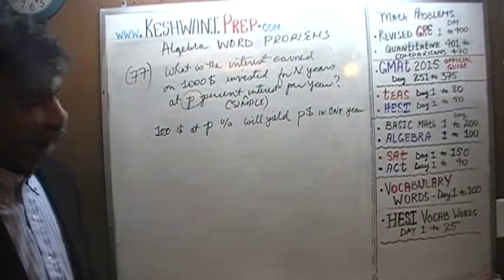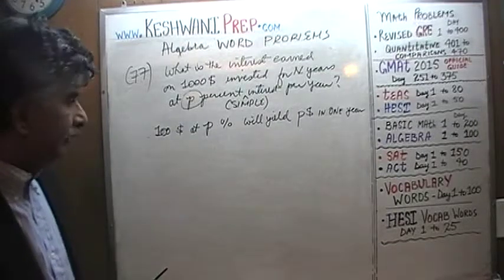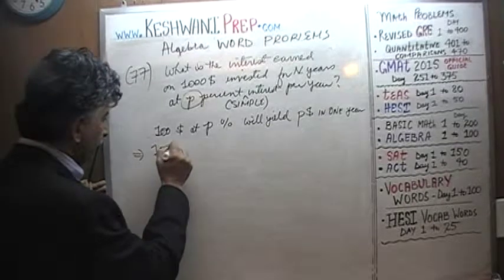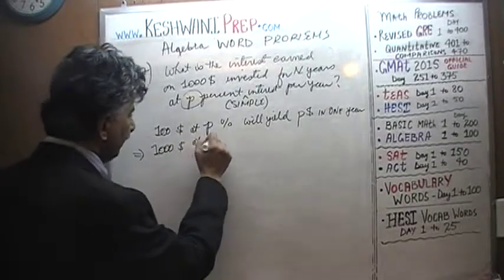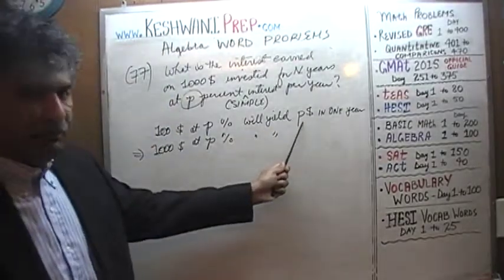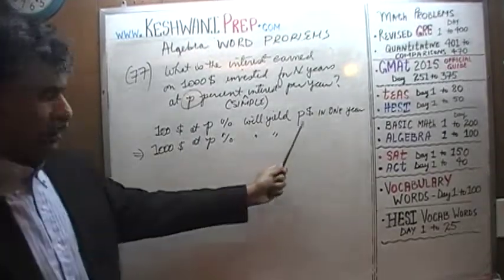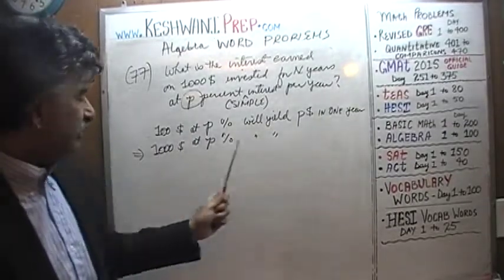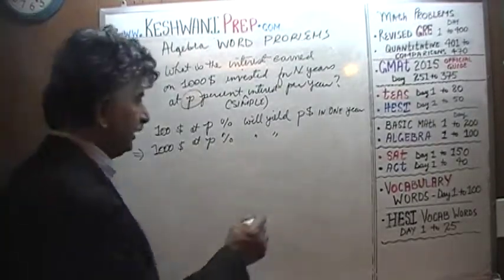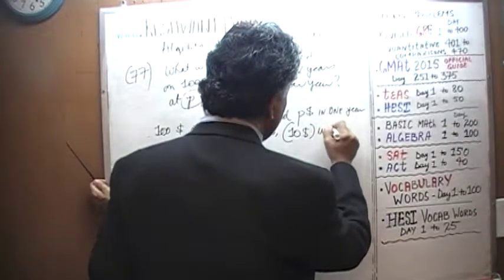We are not investing $100 — we are investing $1,000. So $1,000 invested at P% should yield how much? If $100 earns P dollars in interest, then $200 will earn twice as much, $300 three times as much, and therefore $1,000 should earn 10 times P dollars in one year.